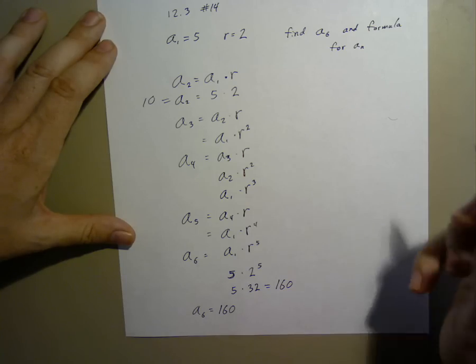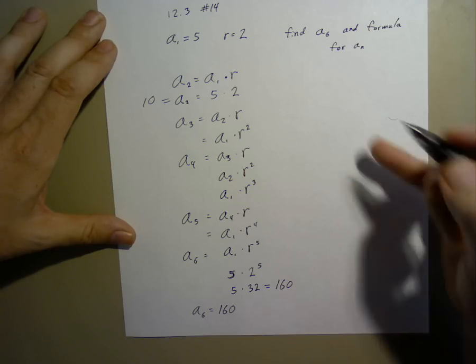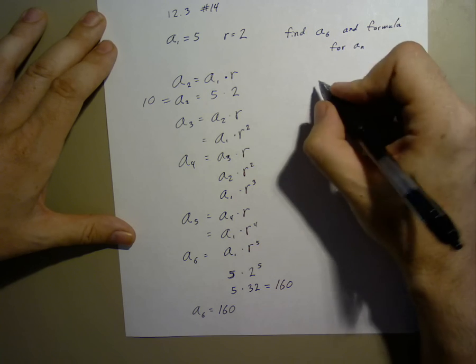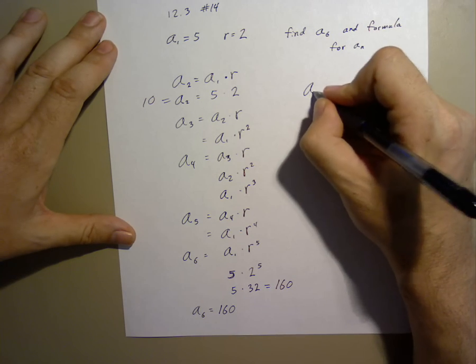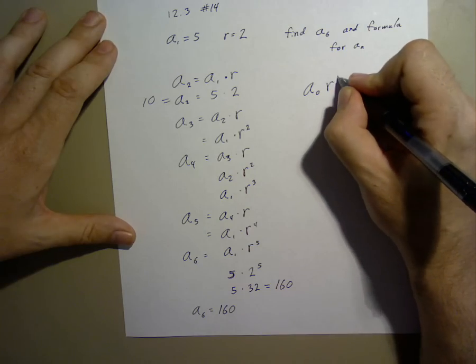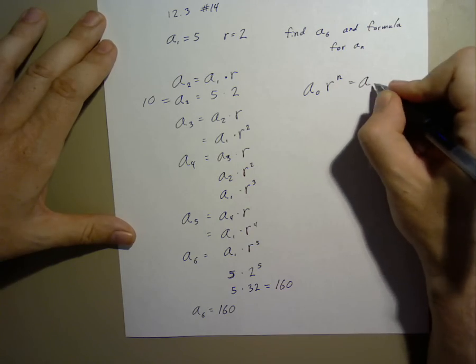Now, we also need to find the generic formula. The generic formula for any geometric series is always a0 times r to the n equals an.